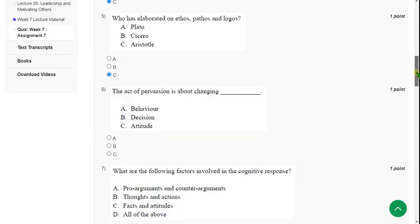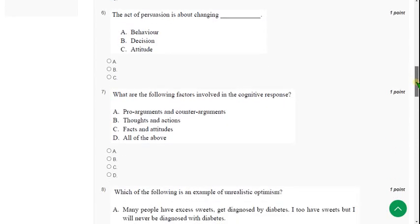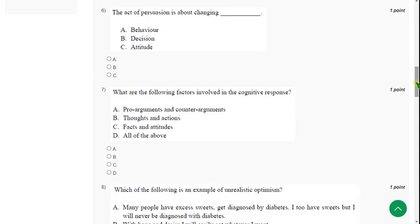Moving on to the sixth question now. The act of persuasion is about changing our attitude. So mark option C.